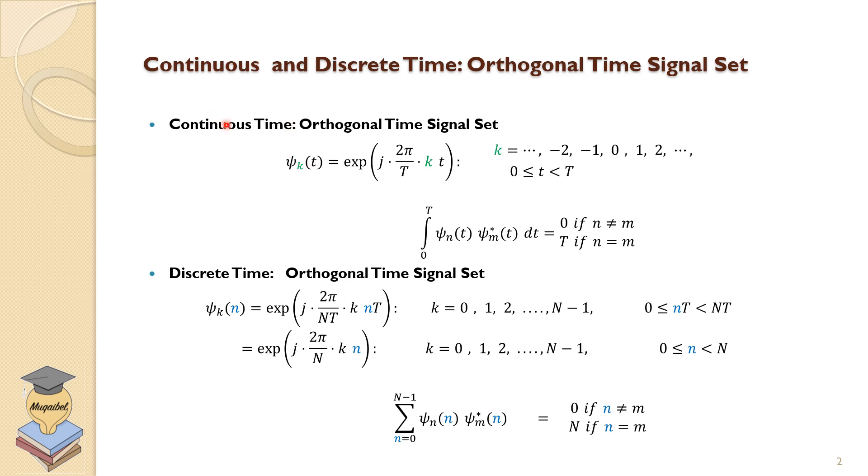In continuous time, the condition for being orthogonal is that the product of the conjugate of the signal and integration for the duration give you zero. Of course, here we are looking at a set of bases ψ. So for this example of exponential bases, if you compare a base, a signal with itself, it should be zero if you compare different bases if m does not equal n, and it should be T otherwise.